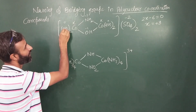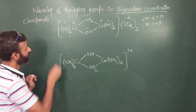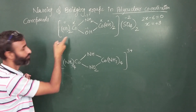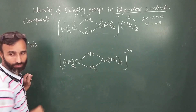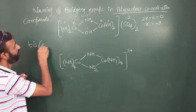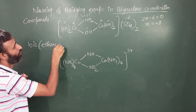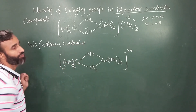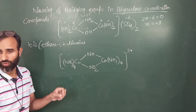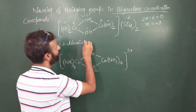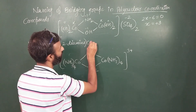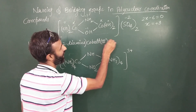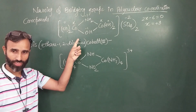This is what we call ethane-1,2-diamine. Ethane-1,2-diamine — cobalt — then hyphen.